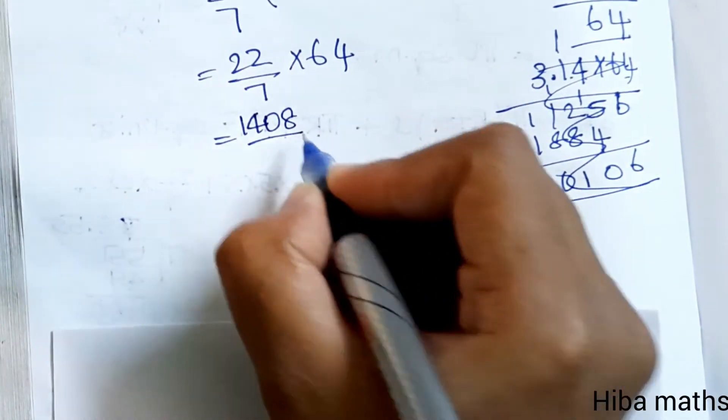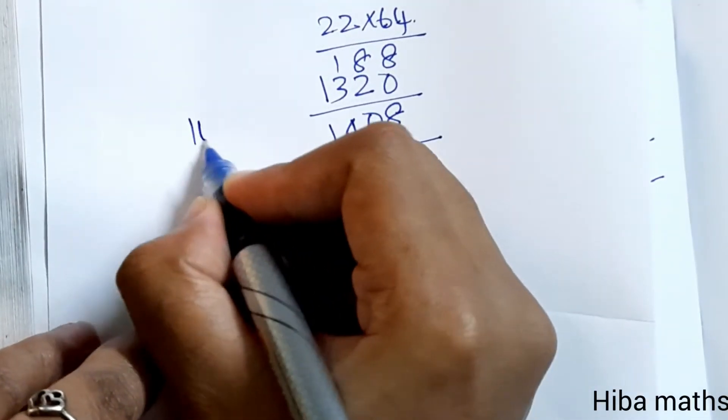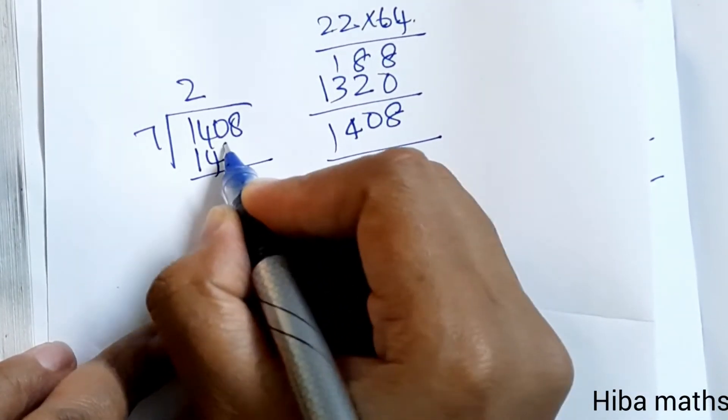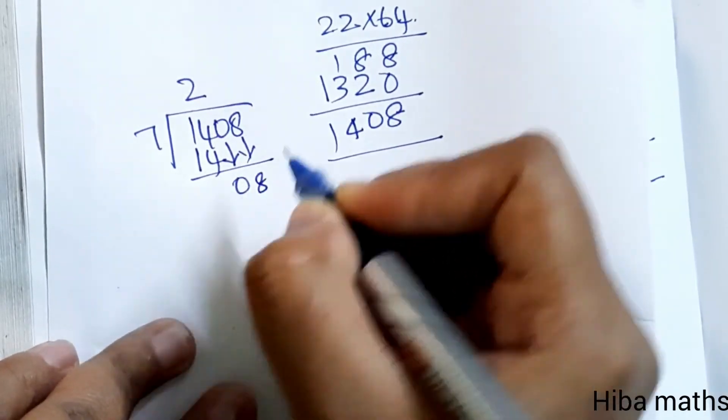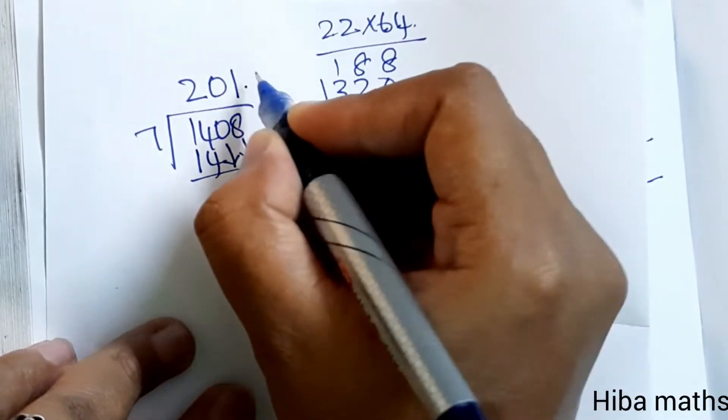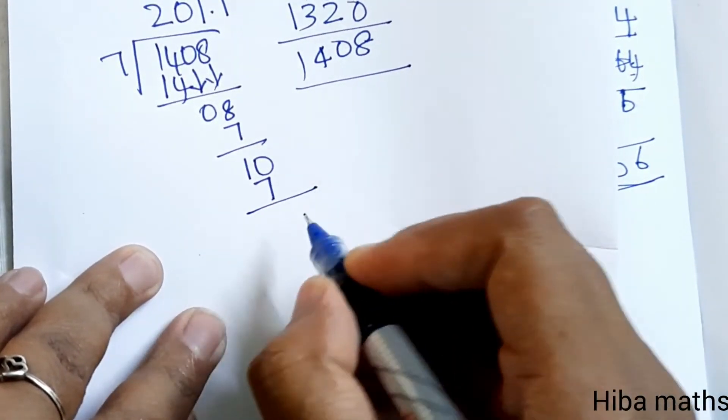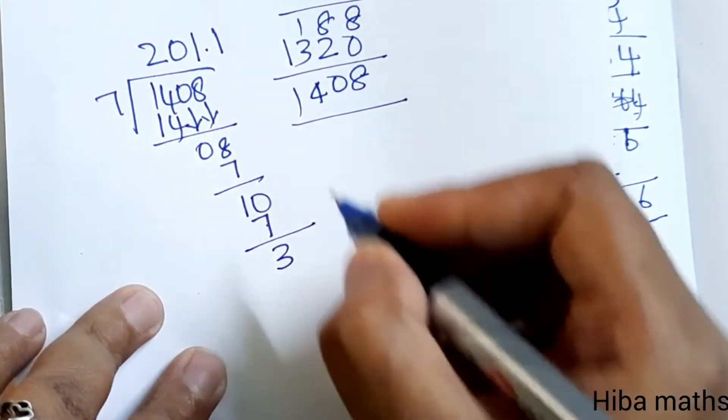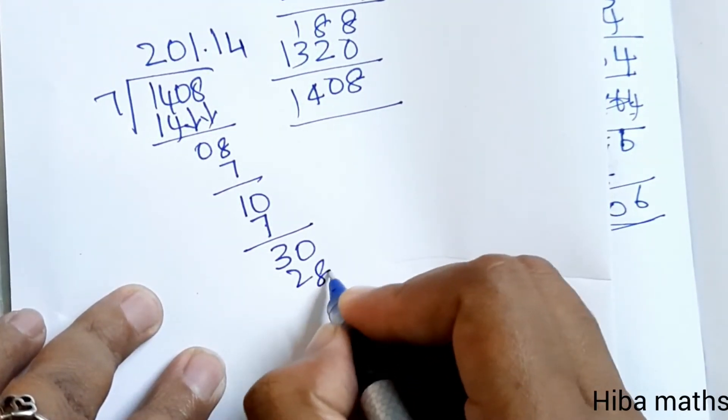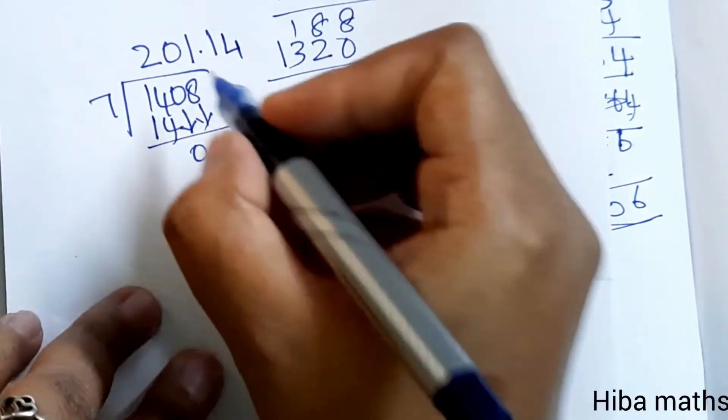So we calculate 1408 divided by 7. Dividing: 7 into 14 is 2, 7 into 0 is 0, 7 into 28 is 4, equals 201.